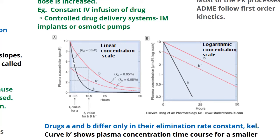Two different drugs, A and B, are given the same dose and therefore have the same volume of distribution and the same initial concentration, but they differ in their elimination rate constant kel. Drug A has an elimination rate constant of 0.2 per hour and drug B has 0.05 per hour. Because A has a relatively high elimination rate constant, its concentration decreases drastically compared to B, which shows a more gradual decrease.